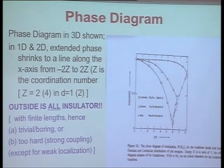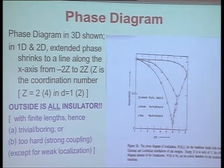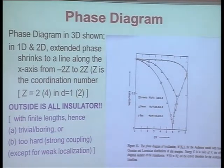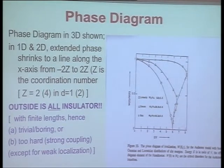For zero disorder, you have extended states all the way up to the band edge at 2ZV. The extended band remains in this regime, but if you go to energies outside or to very large disorder, you only get localized states. This is shown for different kinds of disorder: box distribution, Gaussian distribution, Lorentz distribution, et cetera. But this is only in three dimensions. In two dimensions and one dimension, you have essentially localized states everywhere except along the extended-state line up to the band edge.